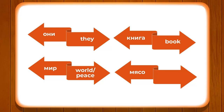Now let's look at: ANI, KNIGA, MIR, and MYASO. ANI means they, KNIGA means book, MIR means world — it can also mean peace depending on context — and MYASO means meat.